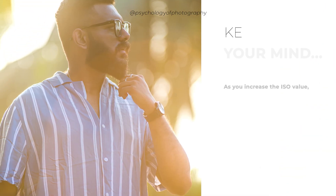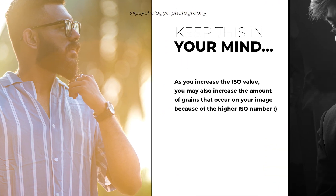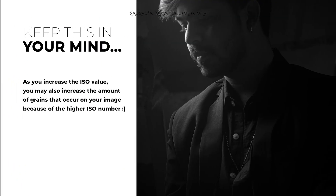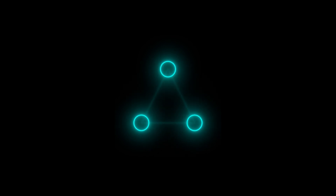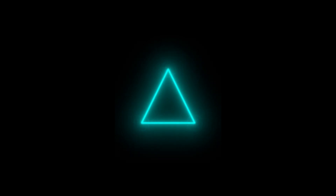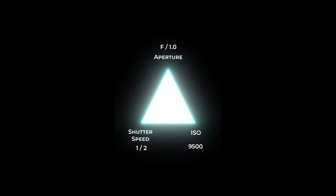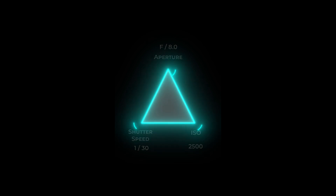It's important to keep in mind that as you increase the ISO value, you may also increase the amount of noise or grain in the image. This is why it's important to find the right balance between ISO, shutter speed, and aperture when adjusting the exposure of an image. Generally, you'll want to use the lowest ISO value possible in order to get the best image quality.